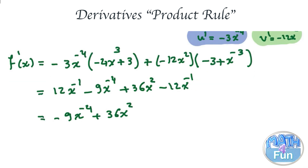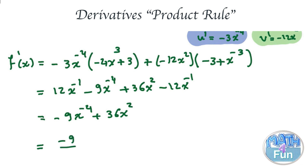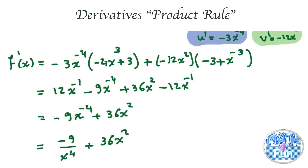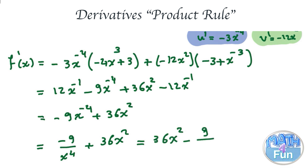If you want to simplify further, write x to the power negative 4 as a denominator to get minus 9 over x to the power 4, making the power positive. So the final simplified form is 36x squared minus 9 over x to the power 4.